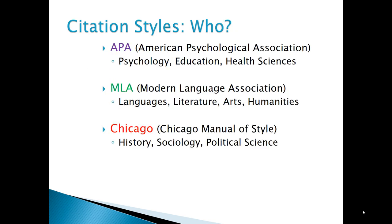A confusing part about citation styles is that professions and disciplines have developed the style that works best for their publications. So while students choose their degree and profession, it is the area of study that determines the citation style you will use. The APA style is used in many sciences, including psychology, health sciences, and education. MLA style is used by most of the humanities and the arts. The Chicago Manual of Style is used in history and many social sciences, such as sociology and political science.